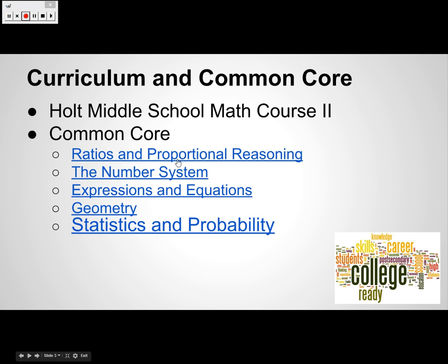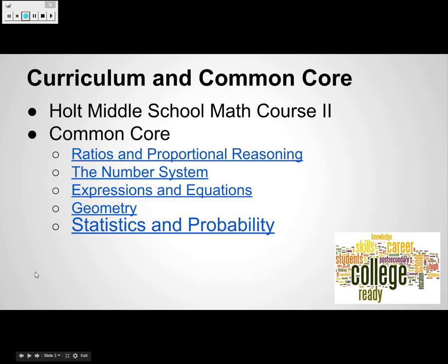Linked here are all the different Common Core standards we are responsible for, so you'll be able to watch this and connect at your leisure. The different strands we're responsible for include ratios and proportional reasoning, the number system, expressions and equations — which move into the next chapter — then the number system in chapter 3, geometry later in the year, and statistics and probability. We're working on statistics right now, with data analysis, graphing, and data representations.